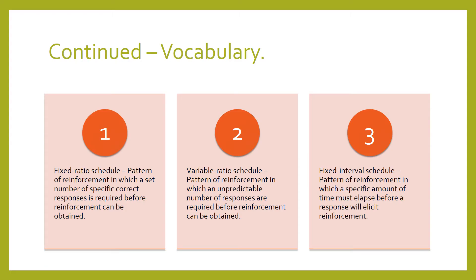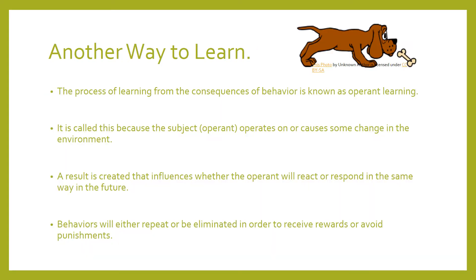Some continued vocabulary. A fixed ratio schedule is a pattern of reinforcement in which a set number of specific correct responses is required before reinforcement can be obtained. A variable ratio schedule is a pattern of reinforcement in which an unpredictable number of responses are required before reinforcement can be obtained. A fixed interval schedule is a pattern of reinforcement in which a specific amount of time must elapse before a response will elicit reinforcement. We just talked about classical conditioning earlier this week, and operant learning is another way to learn.